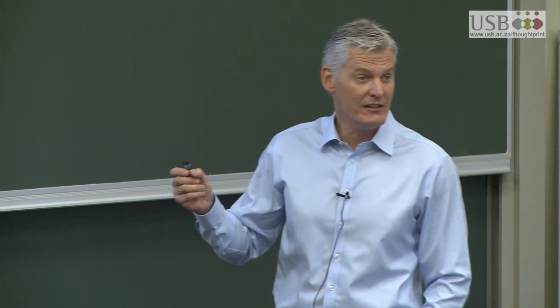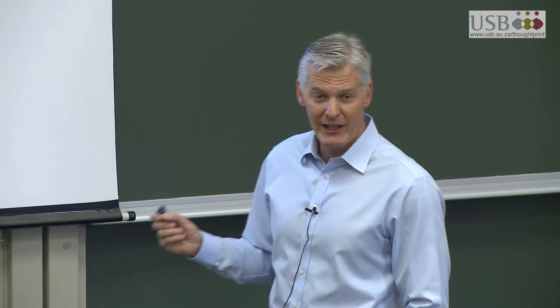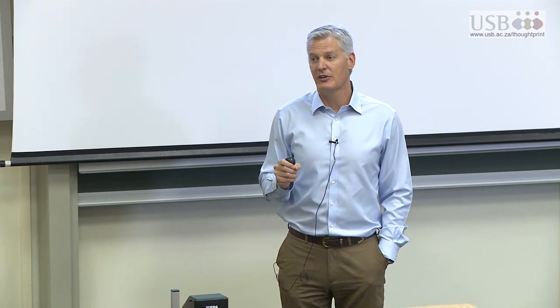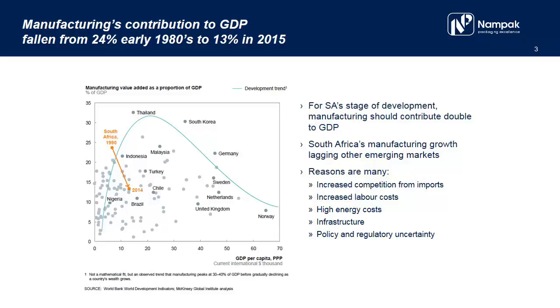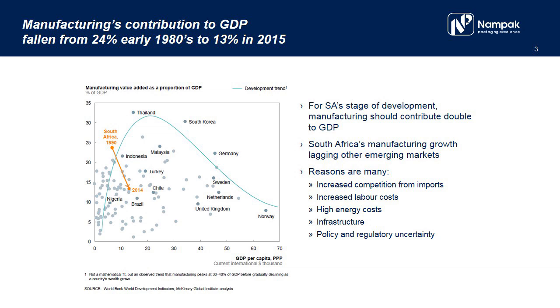We've seen, without significant growth in our GDP per capita, a significant drop in the status of manufacturing as a contributor to GDP. This is a cause for concern, because if you look at countries with which we compete — all of the emerging markets — we should be sitting at about 28 to 30% of contribution to GDP as a manufacturing sector. So there's a big opportunity for us, but there are also reasons why things are where they are.